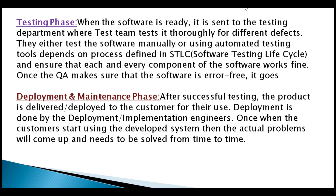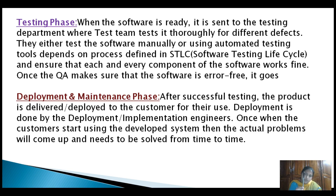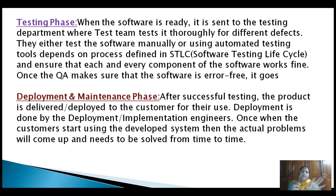Now I am going to take one general example explaining all these phases. If you want to develop a product — a general product like a pen — before developing the actual product, the developer first collects the requirements from the customer, meaning what type of pen they want to develop. After collecting the requirements, the analyst will analyze those requirements and note them down in a document called the Business Requirement Specification document.